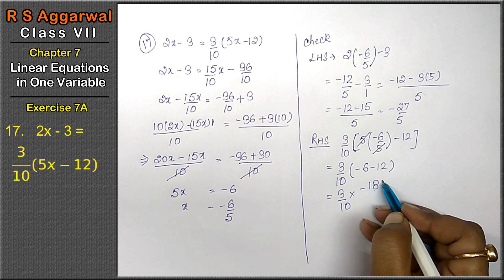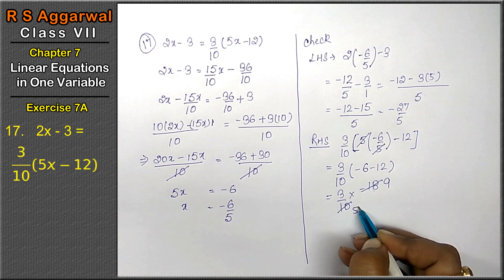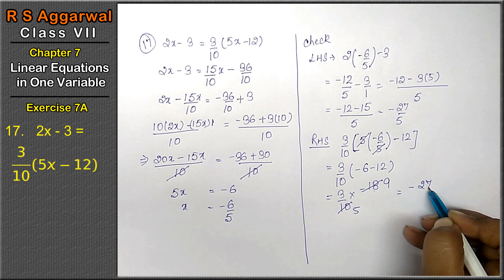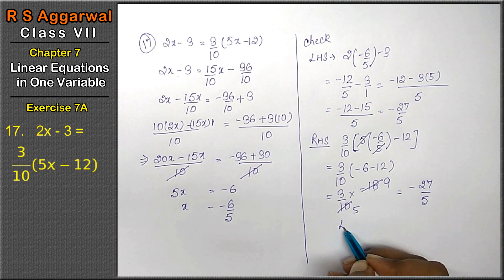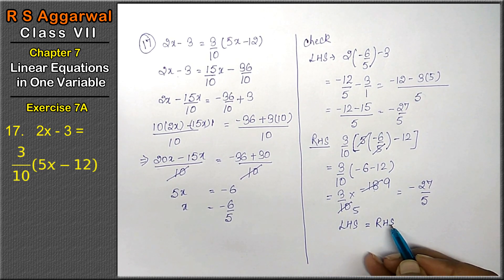2 nines are 18 and 2 fives are 10. That means minus 27 upon 5 is the answer. That is left-hand side is equals to right-hand side.